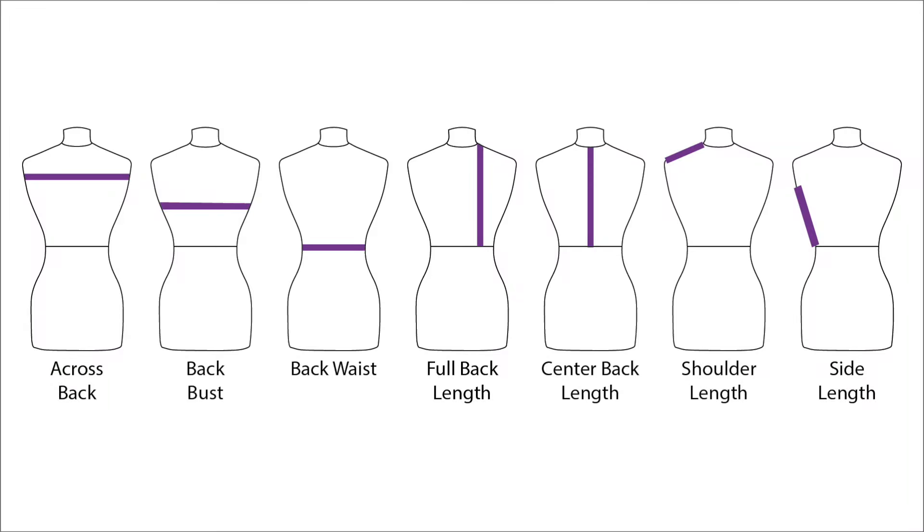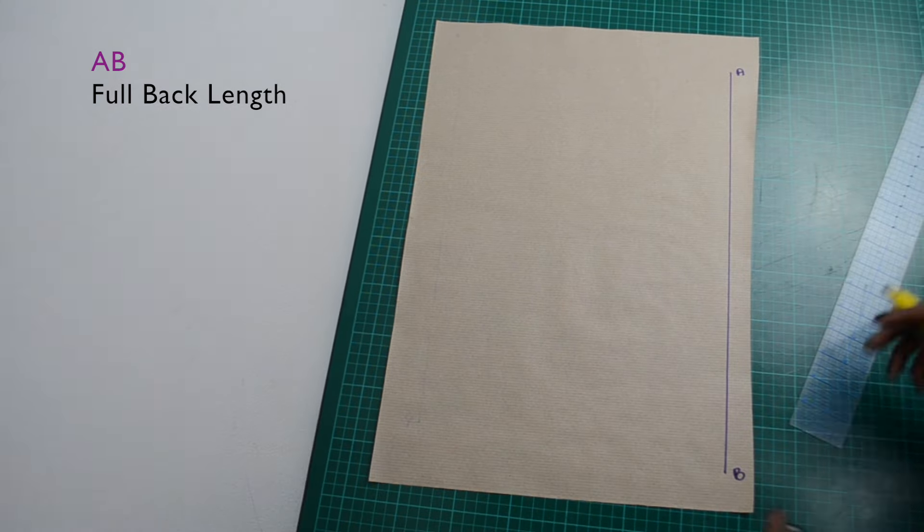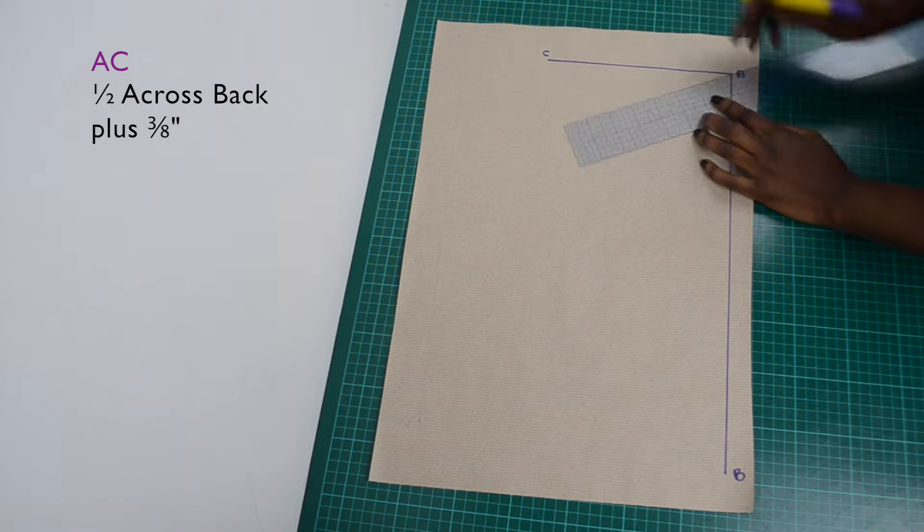Similarly for the back, you will need to take seven measurements. The back bust is measured directly behind where you measured your front bust. Then drop 3 inches from C.